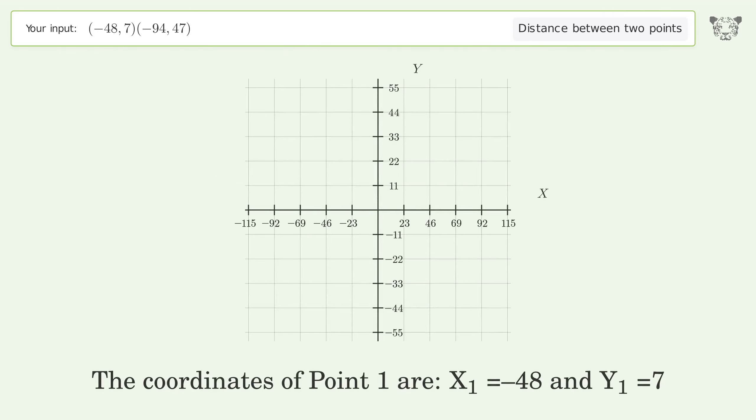The coordinates of point 1 are x1 equals negative 48 and y1 equals 7. The coordinates of point 2 are x2 equals negative 94 and y2 equals 47. d is the distance between the two points.